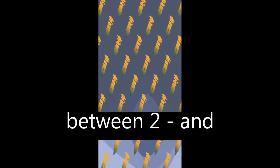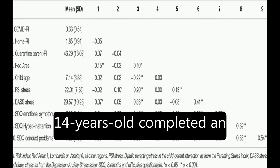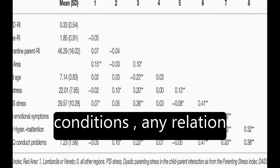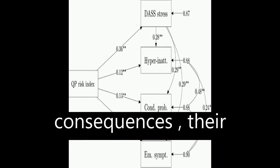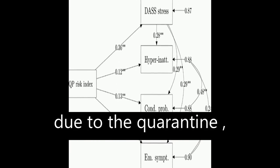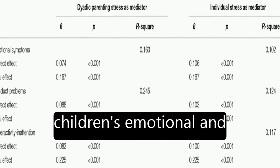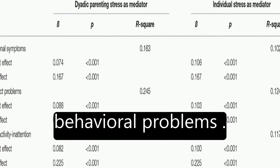Parents of children aged between 2 and 14 years old completed an online survey reporting their home environment conditions, any relation they had to the pandemic consequences, their difficulties experienced due to the quarantine, their perception of individual and parent-child dyadic stress, and their children's emotional and behavioral problems.